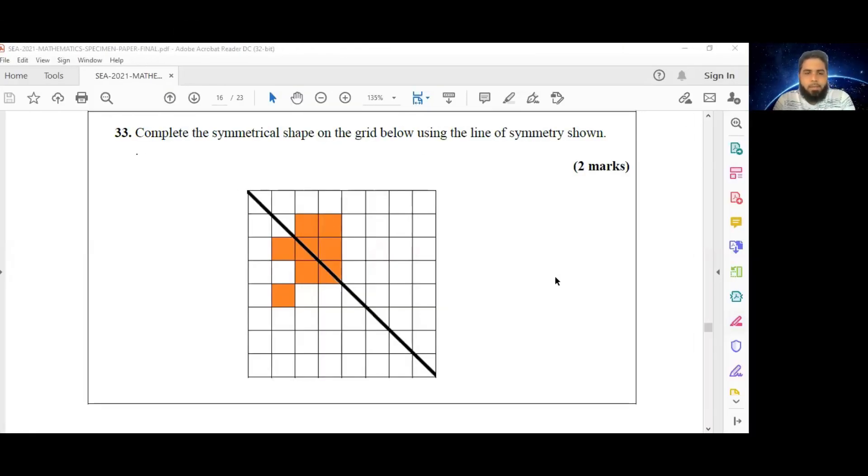Good evening, assalamu alaikum, and welcome back to the SEA specimen paper series here on C Results. Today we'll be doing two questions that are based on geometry: number 33 and 34.